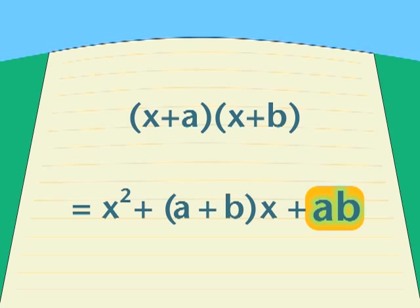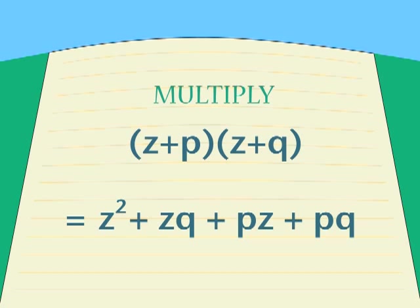In the last term of our answer, a and b are multiplied together. There it is, a, b, a times b. And what are a and b? They are the final terms in each of our two original binomial expressions. Would this work in a different problem? Would the pattern still be the same?